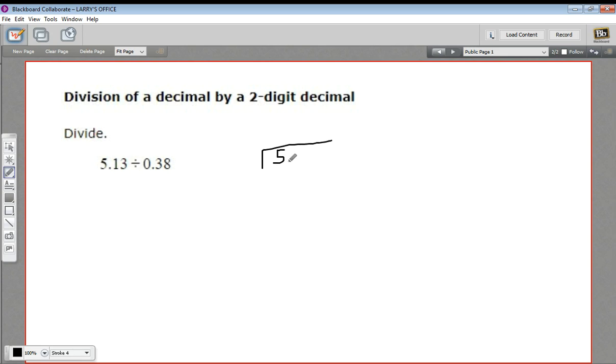So I'm going to show you. The first thing you do is just set it up like a regular long division problem. And then what you want to do is move the decimal point so that you get a whole number out here on the outside of our little bracket. So I'm going to have to move this two spaces to get the decimal point there.